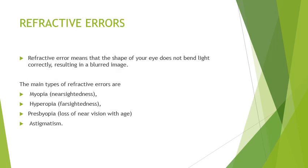Now let us see what are the refractive errors. Refractive error means that the shape of the eye does not bend light correctly, and usually it results in a blurred image. The main types of refractive errors are myopia, also known as nearsightedness; hyperopia, also known as farsightedness; presbyopia, where there is loss of near vision with age; and astigmatism.